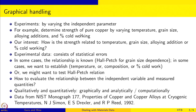Here is an example: to determine the strength of pure copper, you can vary temperature, grain size, alloying addition, or percentage cold working. Our interest is typically in knowing how strength is related to these parameters. But we cannot directly read it off from the data because the data consists of statistical errors. In some cases, between strength and grain size, you might already know the relationship. In other cases, such as how it changes with temperature or composition, we may have no idea.